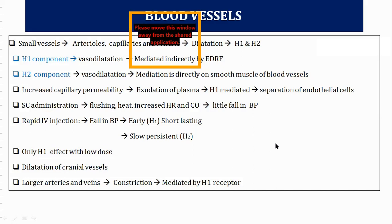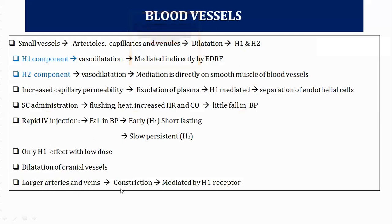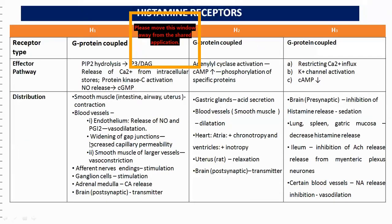Blood pressure returns to normal once both receptor types are blocked by antihistamines. Histamine also affects blood vessels in the brain — if the drug has sufficient lipid solubility to cross the blood-brain barrier, it causes dilation of cranial blood vessels via H1 and H2 receptors. On large arteries and veins, histamine causes constriction via H1 receptors.